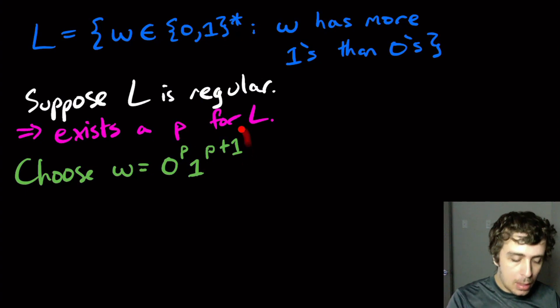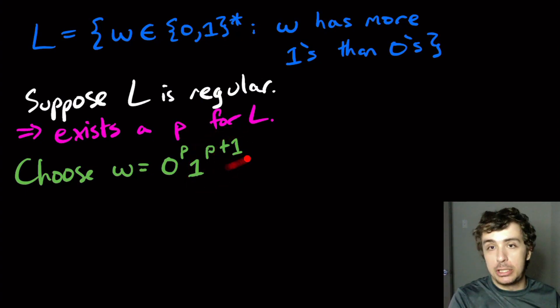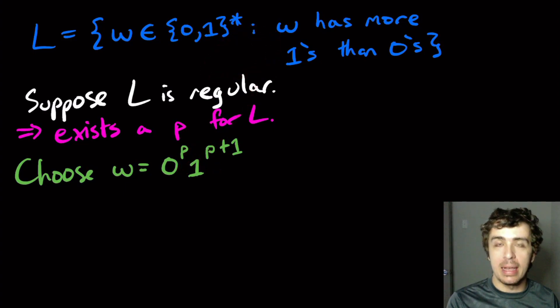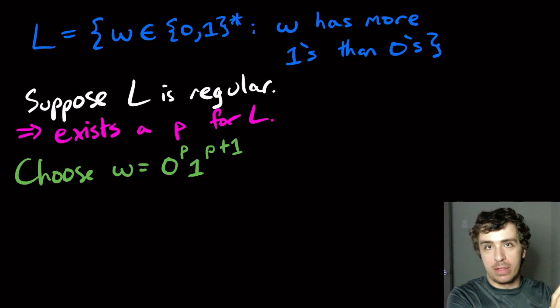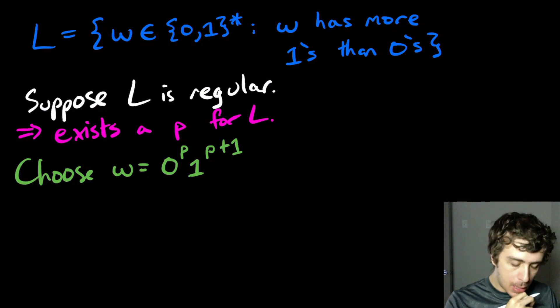Okay, so I could pick P plus 2 because that's more 1s than 0s also. I can't pick 0 to the P, 1 to the P, no plus 1, because then it would not be in this language. It's got to start in the language and then we pump out of the language.